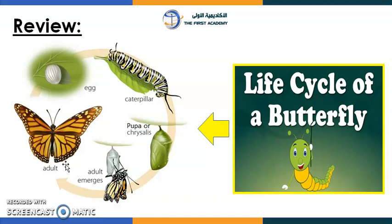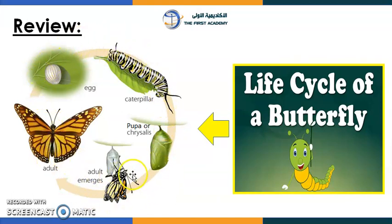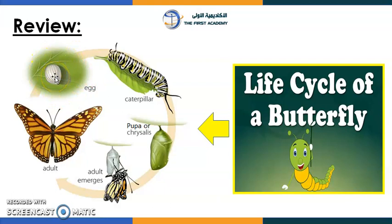Excellent, well done! Now we will move to talk about the life cycle of the butterfly. Look over here and tell me what you can see. Let's start from the first stage: the egg. You can see the egg — this is the first stage. The egg will hatch.